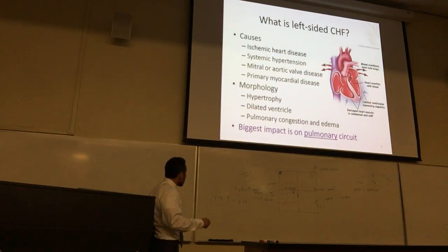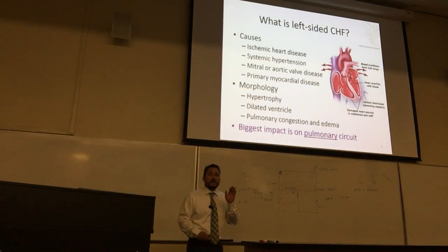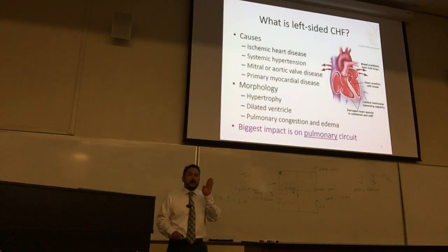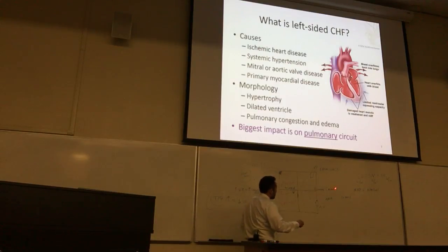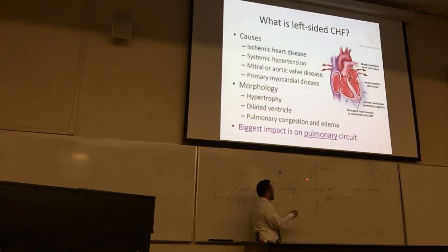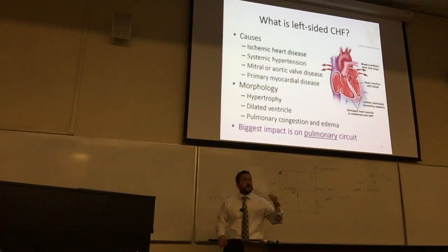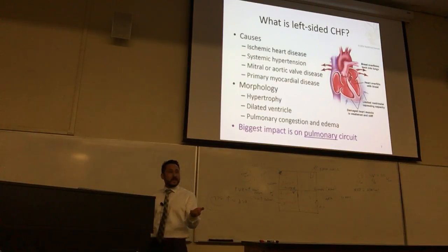The biggest impact is on the pulmonary circuit on the left side, because if you back up from the aorta you're backing up to the lungs. All that fluid — edema and pulmonary congestion — ends up in the lungs in left-sided heart failure patients.